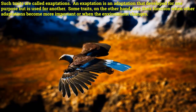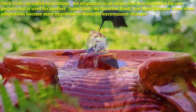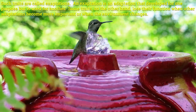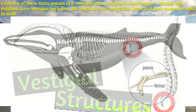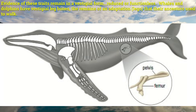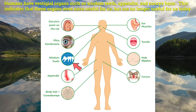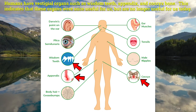An exaptation is an adaptation that develops for one purpose but is used for another. Some traits, on the other hand, lose their function when other adaptations become more important or when the environment changes. Evidence of these traits remain in a vestigial form, reduced or functionless. Whales and dolphins have vestigial leg bones, the remains of an adaptation that their ancestors used to walk. Humans have vestigial organs such as wisdom teeth, appendix, and their coccyx bone. This indicates that these organs were once useful for us but are no longer useful for us today.